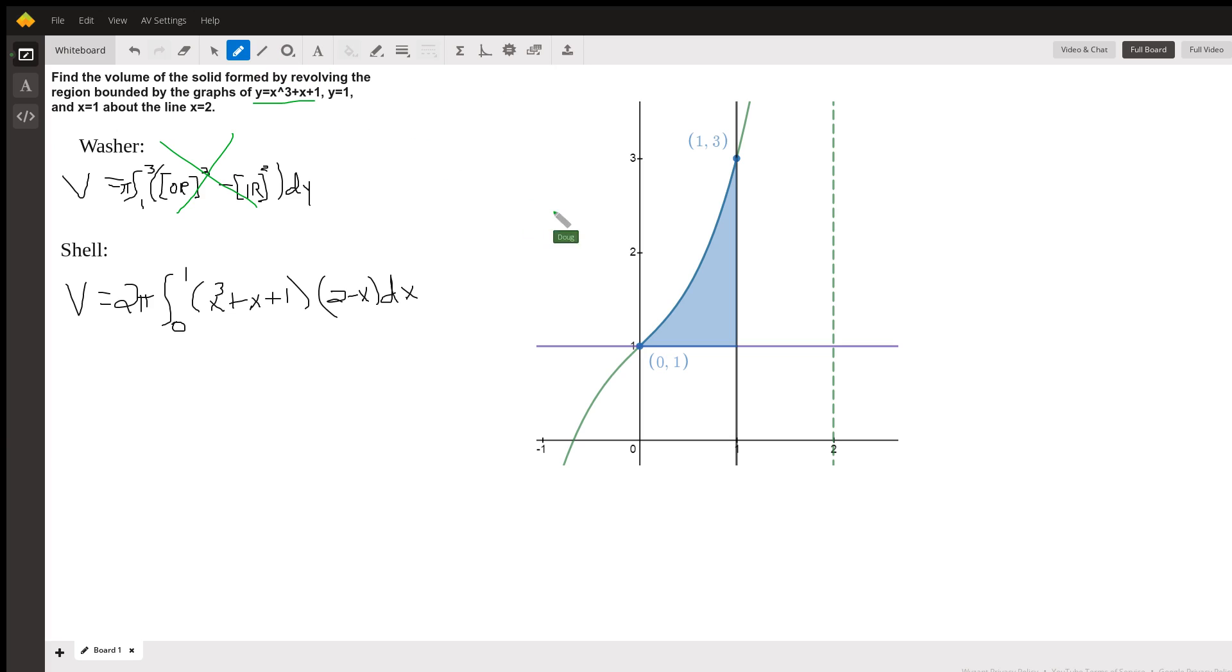we're going to try the shell method instead. So we want to envision a typical rectangle or typical shell that is parallel to the axis of revolution.